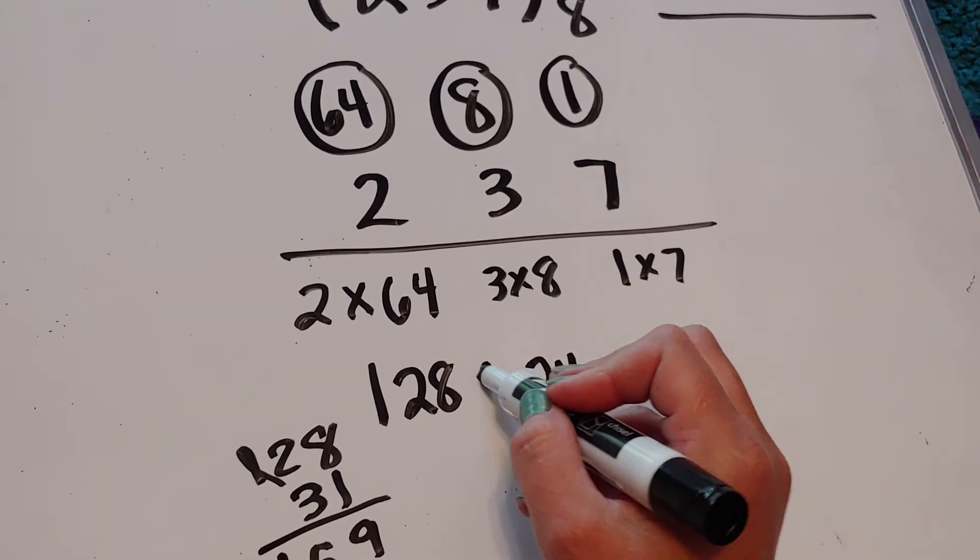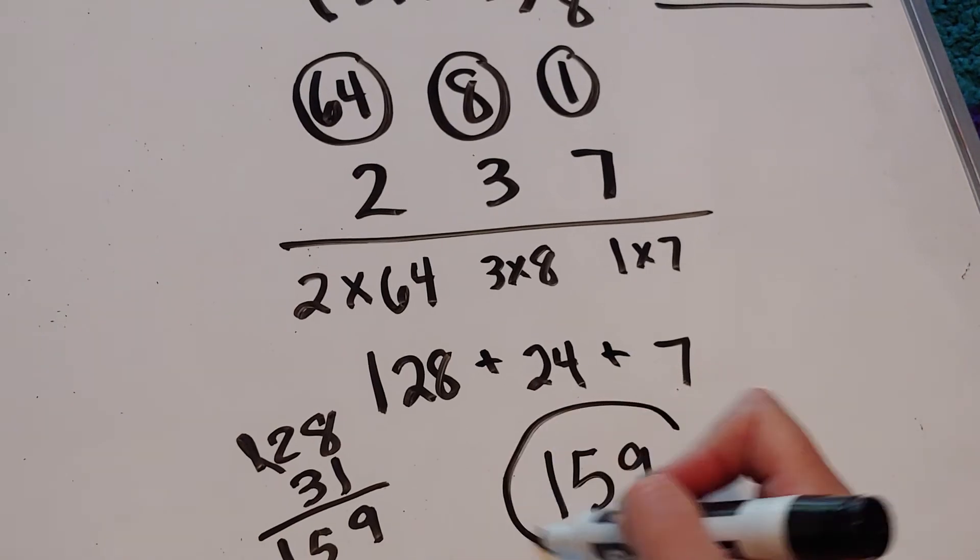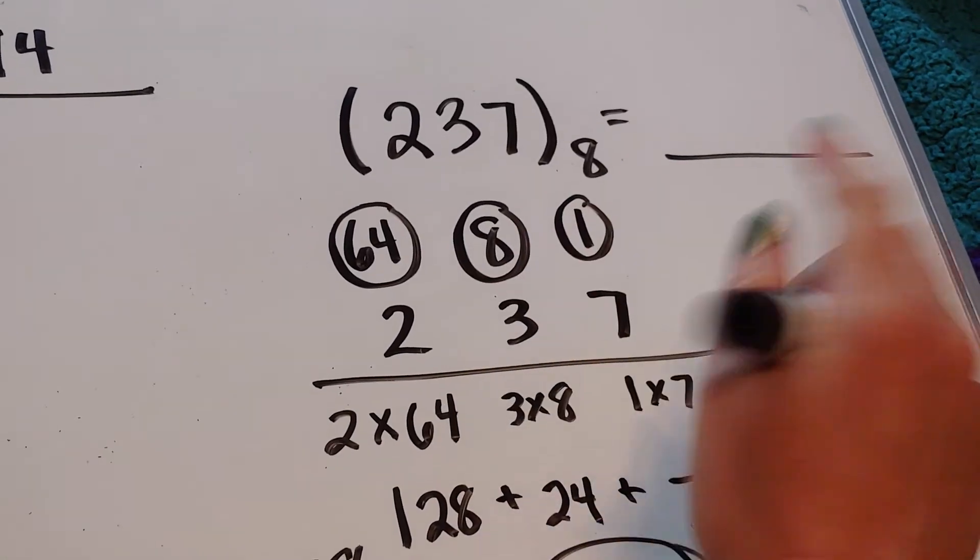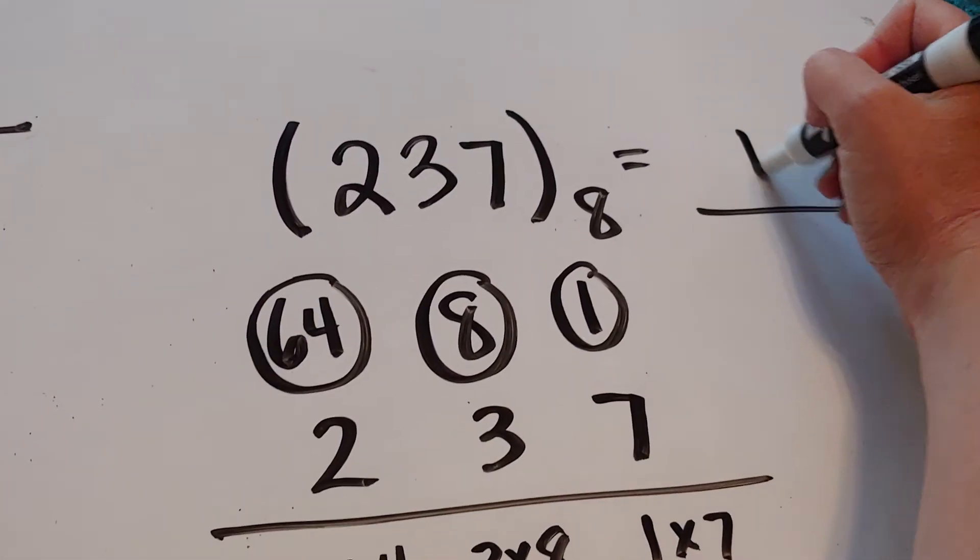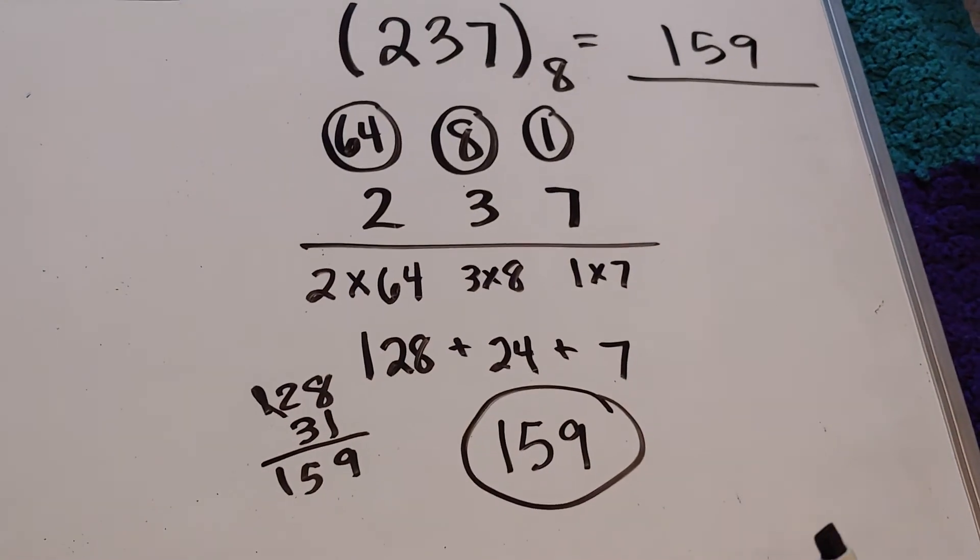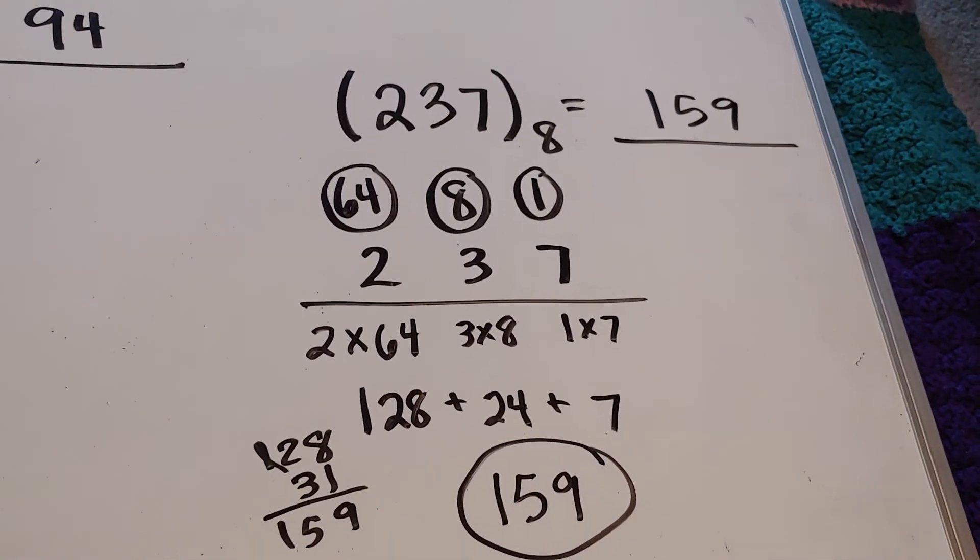So what I have here is that 237 base 8 is the same thing as 159 base 10.